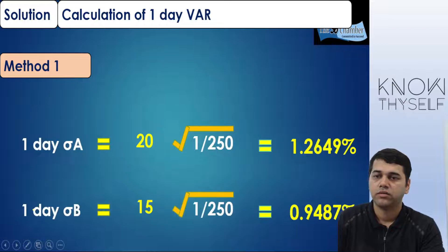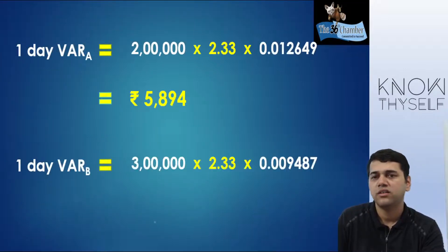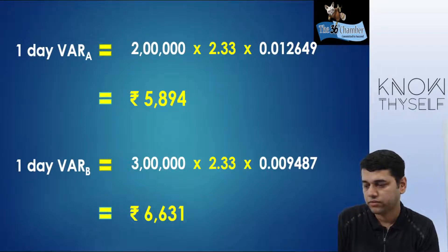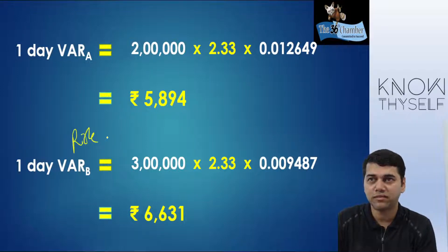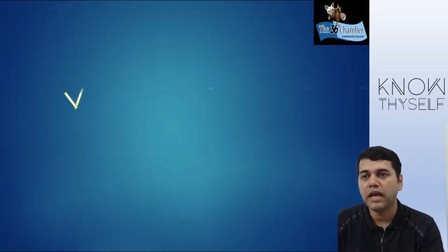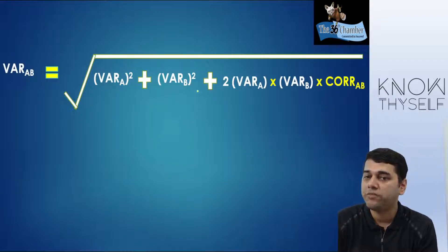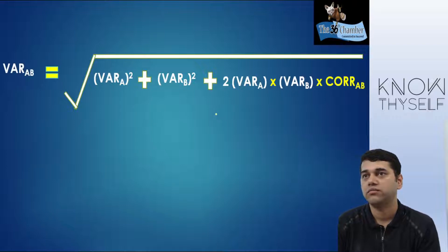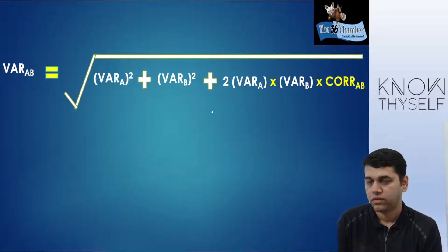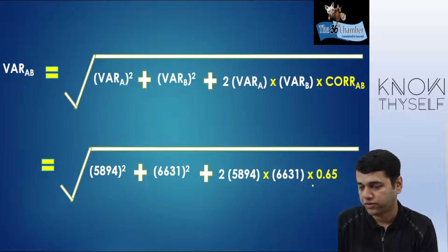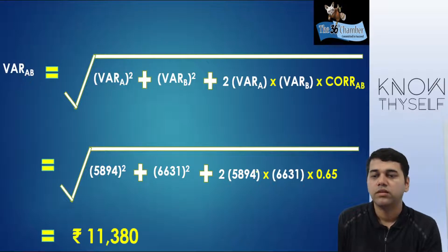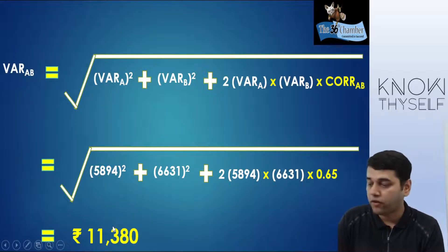So I have split the calculation of standard deviation. You can calculate one-day VAR for A and one-day VAR for B. Now, how to find out the VAR of the portfolio? Apply the portfolio risk formula — VAR is nothing but the risk. Portfolio VAR = √(VAR_A² + VAR_B² + 2 × VAR_A × VAR_B × correlation). With VAR_A = 5,894 and VAR_B = 6,631, plugging in: 5894² + 6631² + 2 × 5894 × 6631 × 0.65, which gives portfolio VAR = 11,380 rupees for one day.